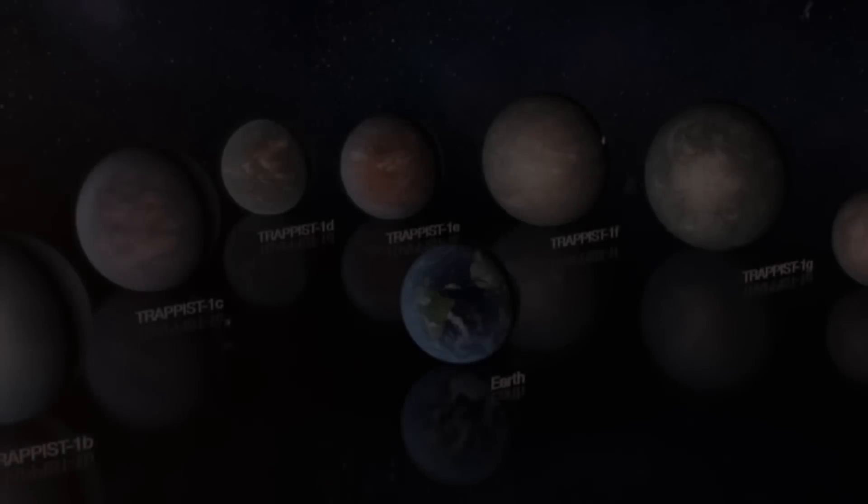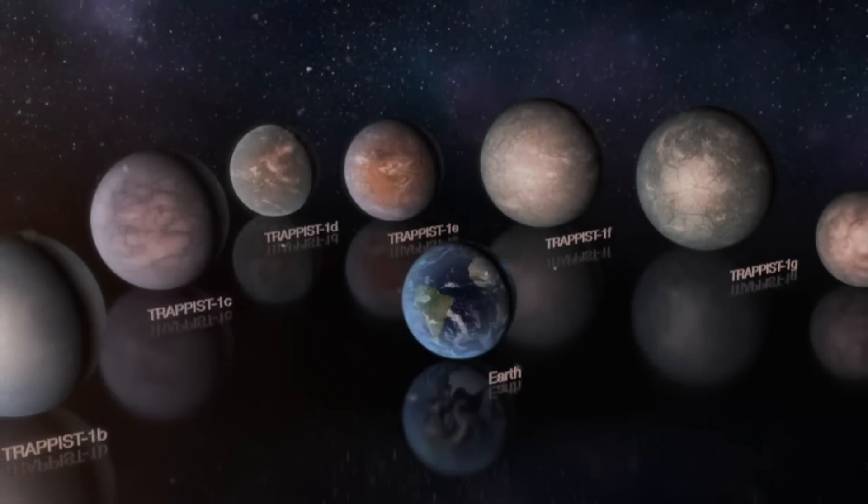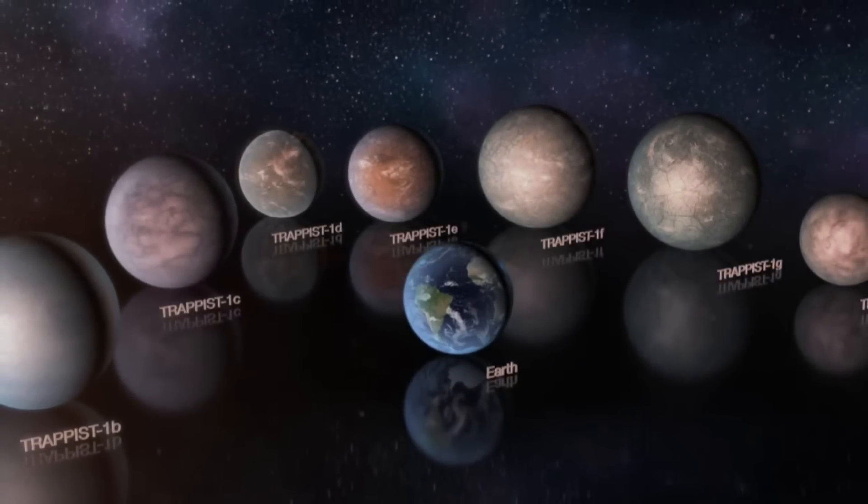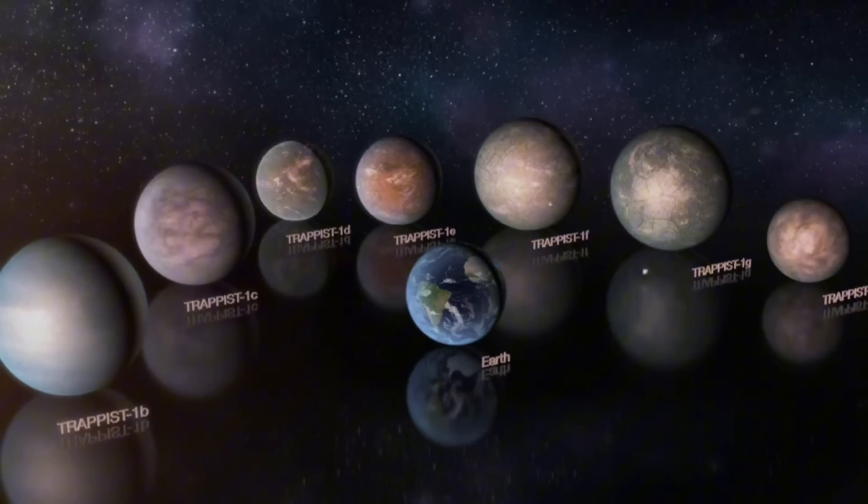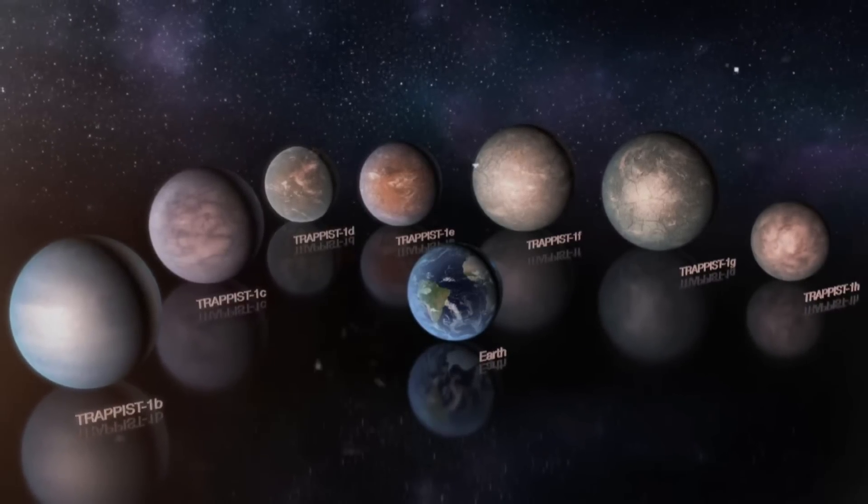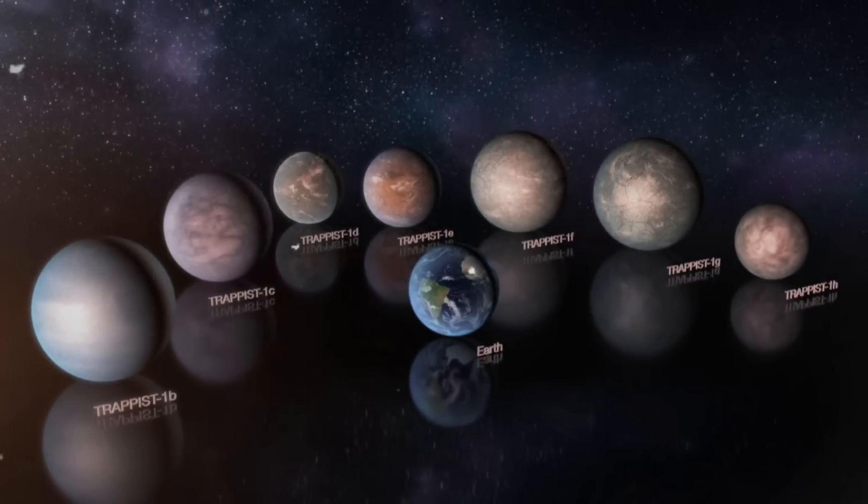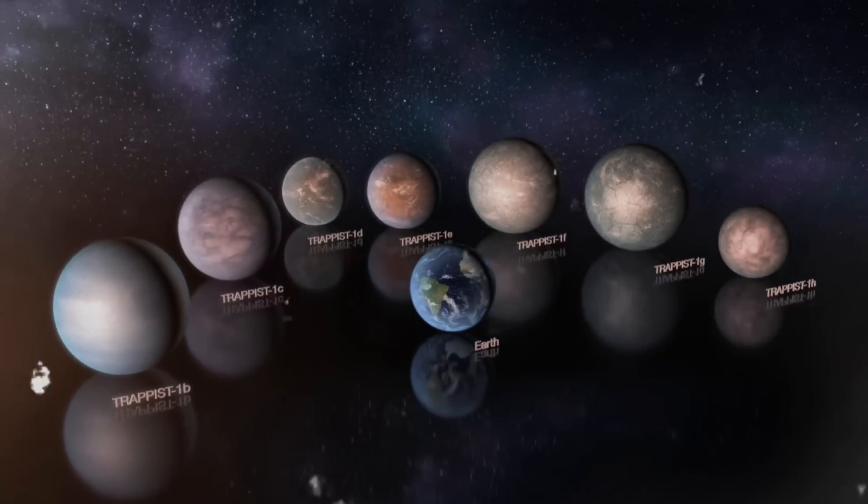Returning to exoplanets, the space observatory measured the day-side temperature of TRAPPIST-1b, a rocky world located about 40 light-years away. Its intense heat suggests a lack of a significant atmosphere, leaving it exposed as a barren, rocky landscape.